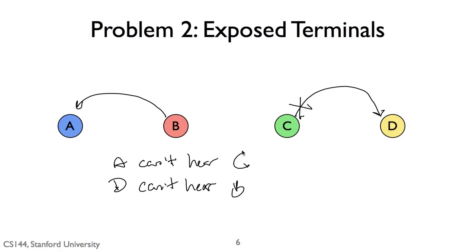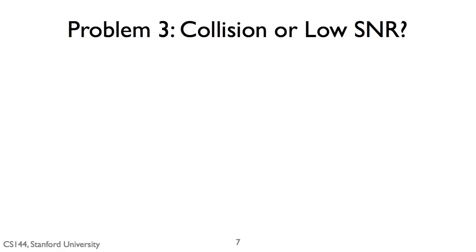And so C is exposed to B. And so whereas a hidden terminal is a case where someone transmits when they shouldn't, an exposed terminal is when someone doesn't transmit when they could.